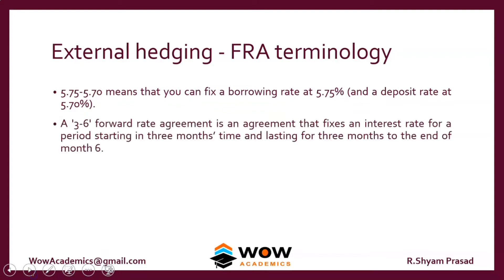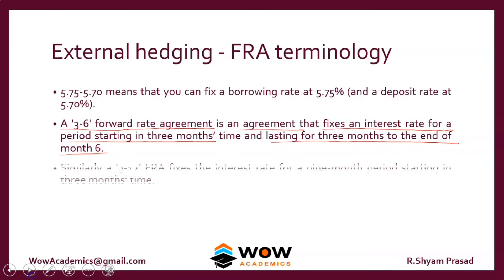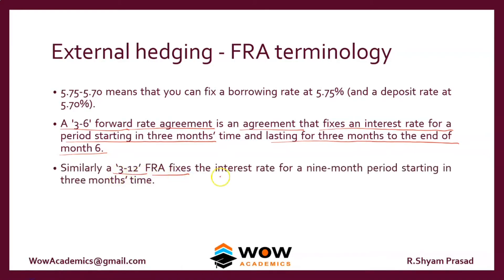A 3-6 FRA is an agreement that fixes an interest rate for a period starting in 3 months' time and lasting for 3 months, ending at the 6-month mark. Similarly, a 3-12 FRA fixes the interest rate for a 9-month period starting from the third month. The first number indicates when the contract starts and the second indicates when it ends.